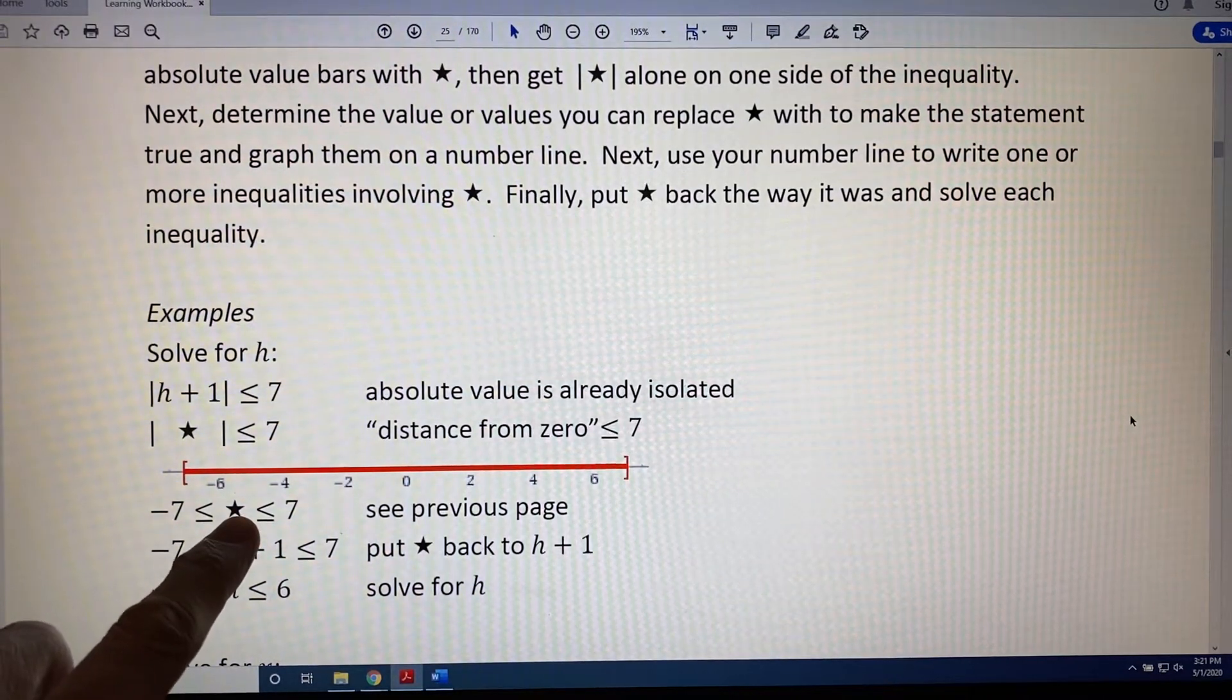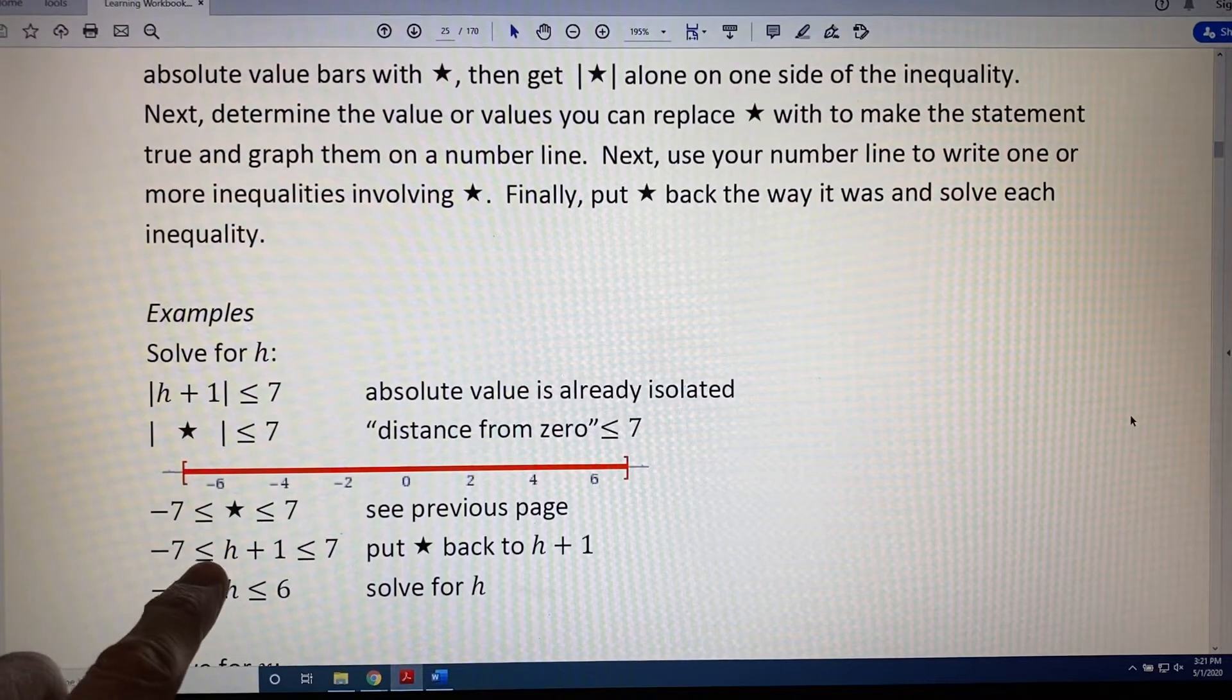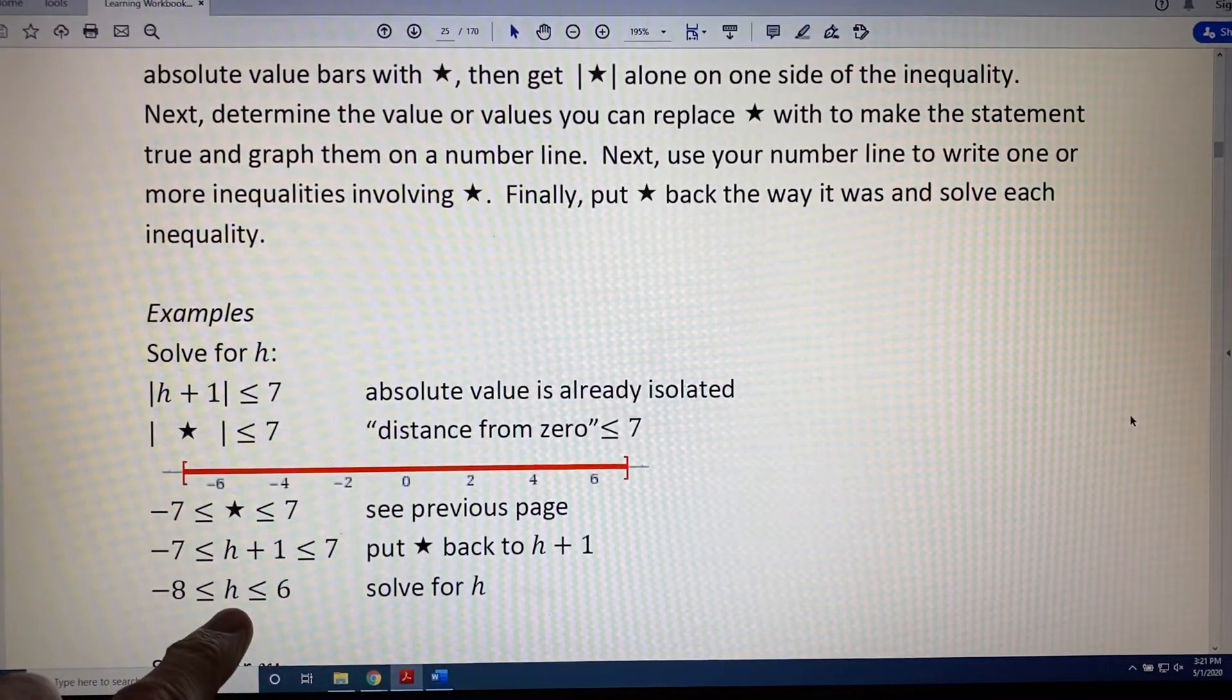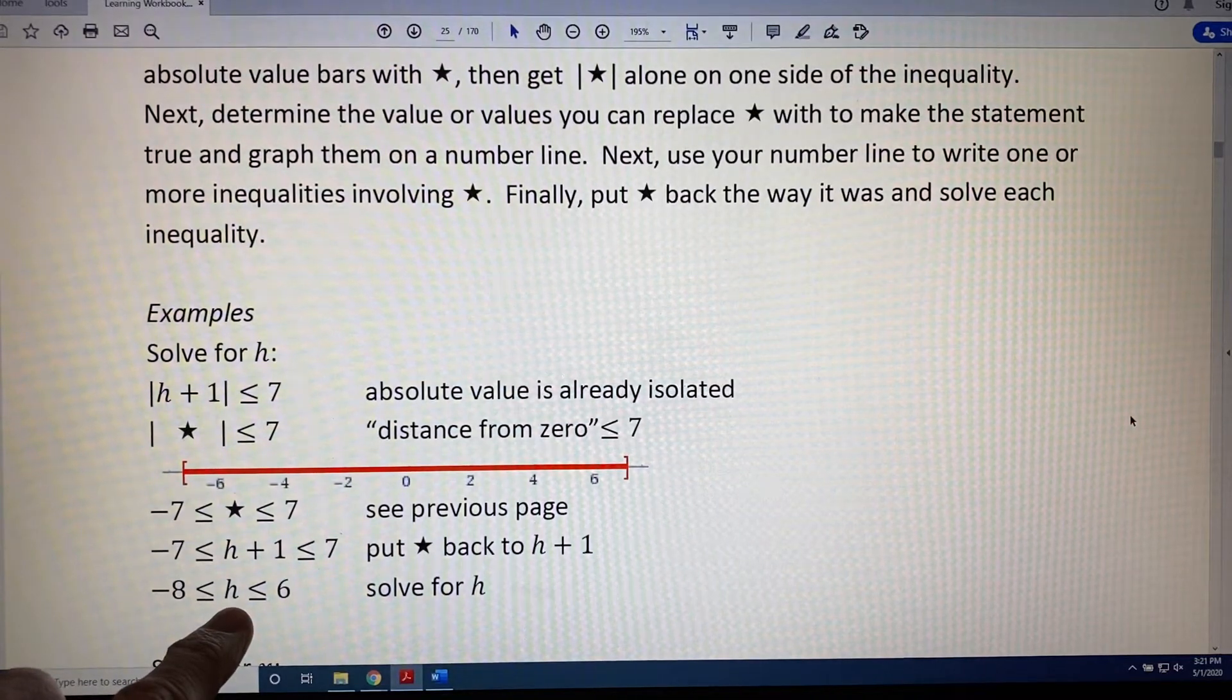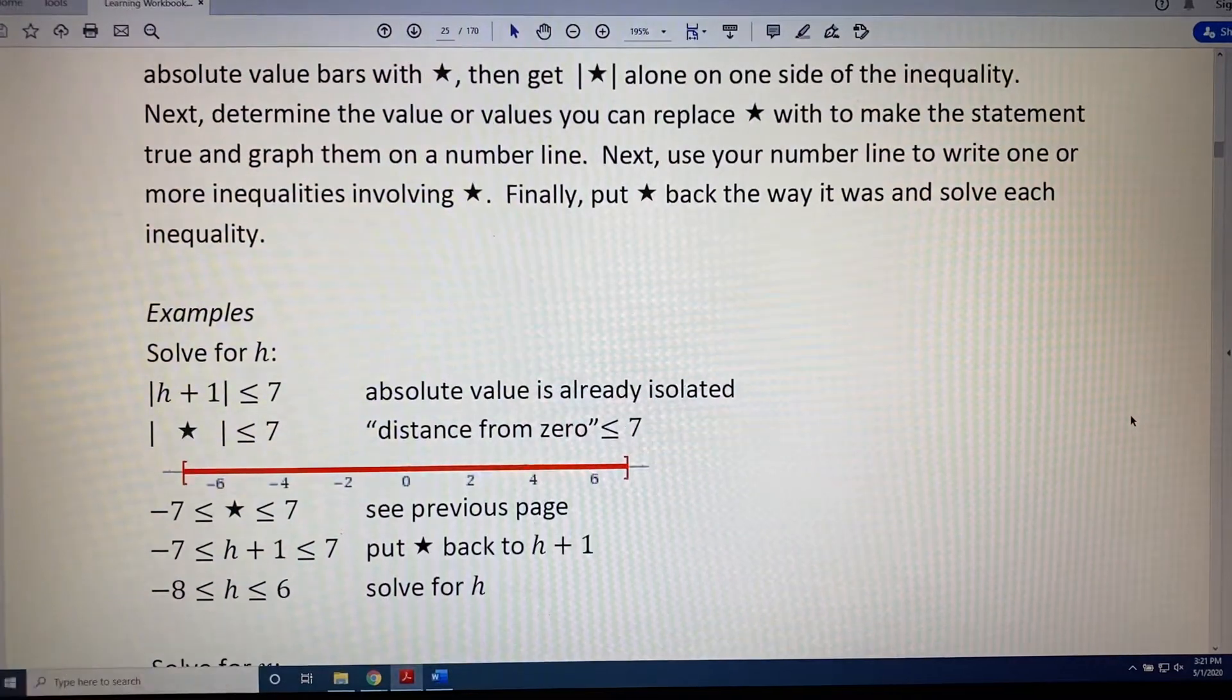Now, put star back the way it was. It used to be h plus 1. So, now we have negative 7 is less than or equal to h plus 1 is less than or equal to 7. And then finally, solve for h. Subtract 1 in all three areas. So, we get negative 8 is less than or equal to h is less than or equal to 6.